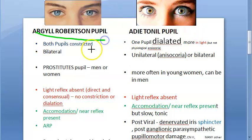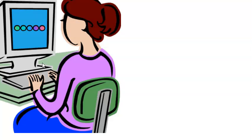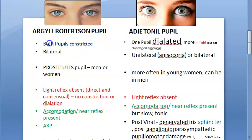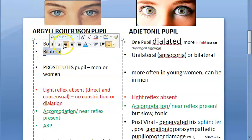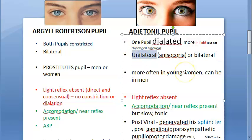In Argyle Robertson pupil, both pupils are constricted. In Adie's tonic pupil, one pupil is dilated — that is the first difference. Argyle Robertson pupil is a bilateral condition, whereas Adie's tonic pupil is unilateral initially, though it can be bilateral.